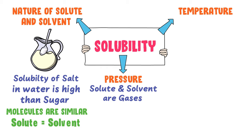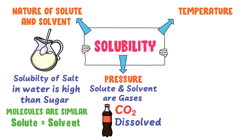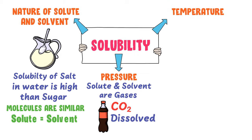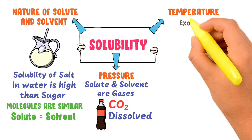For instance, in carbonated drinks, carbon dioxide is dissolved in water at high pressure. Once you open the bottle, pressure decreases and carbon dioxide gas evaporates; as a result, solubility decreases. To learn the effect of temperature on solubility, you must learn three types of chemical reactions: exothermic, endothermic, and isothermic reactions.